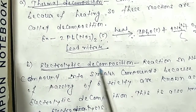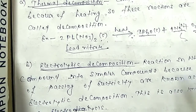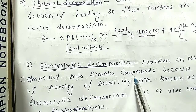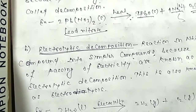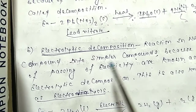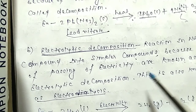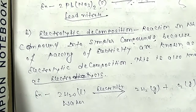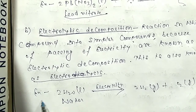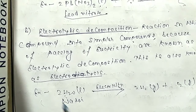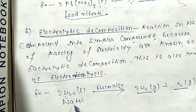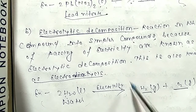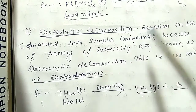Second is electrolytic decomposition: a reaction in which a compound decomposes into simpler compounds because of the passing of electricity is known as electrolytic decomposition, also called electrolysis. For example, when electricity is passed through H₂O, it decomposes into H₂ and O₂.